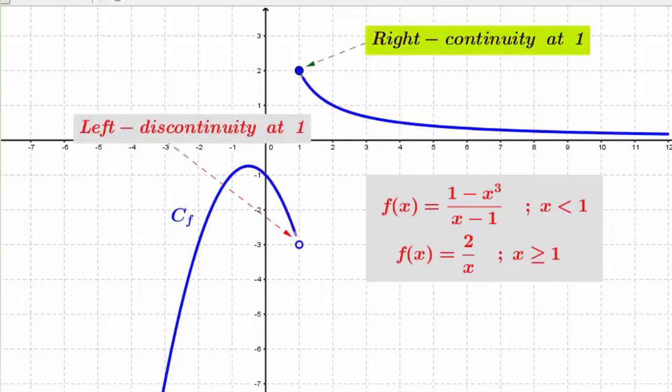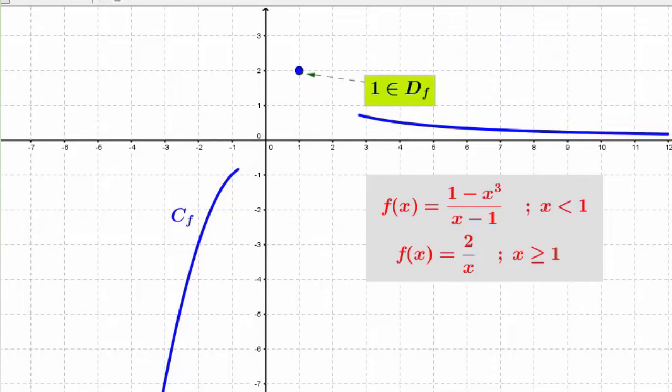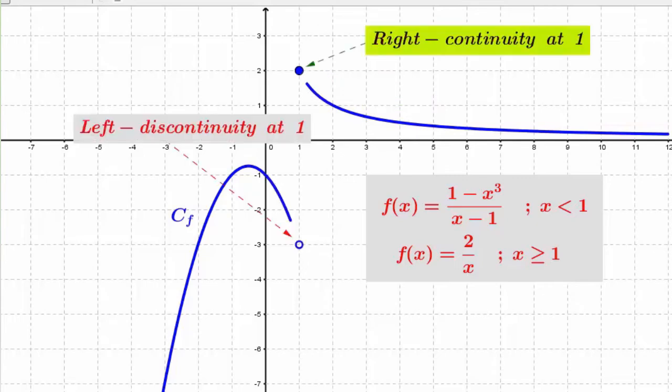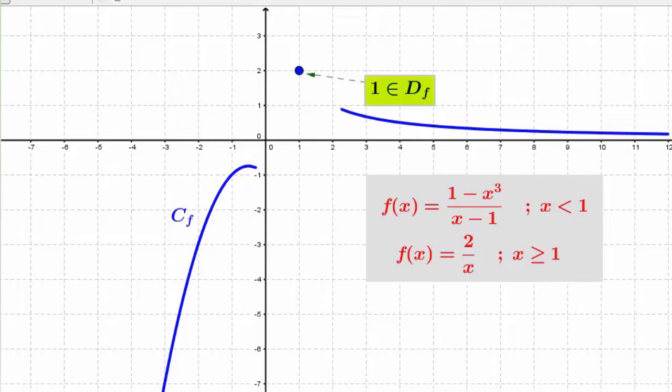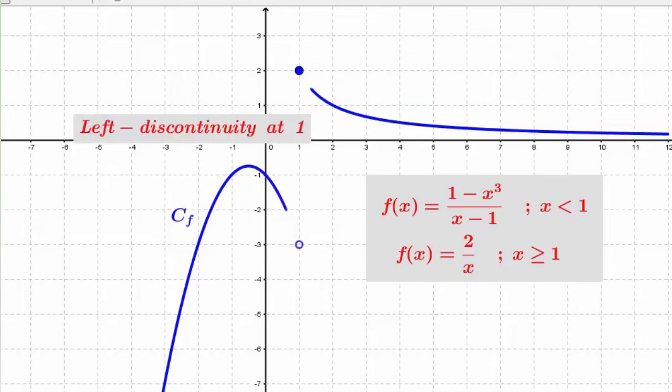Take a look here. There is a level gap at 1, like a jump between the two pieces of the graph. It gives a visual idea about the function discontinuity at 1.